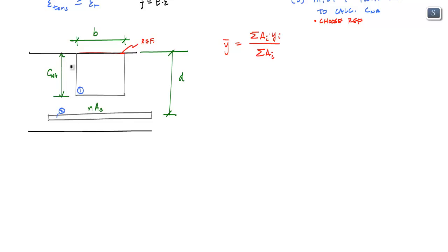Essentially, C and A is the same thing as Y bar. So C and A is equal to the sum of area one times the distance from the reference to the center of area one, which would be C and A over two. And that is just the area of area one, which is B times C and A times the arm, which is C and A over two, plus the area of area two over here, or element two, which is N-A-S times the distance from the reference to the centroid of area two times D. Divided by the total area of this cross section, which is merely B times C and A plus N-A-S.